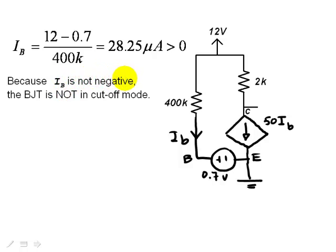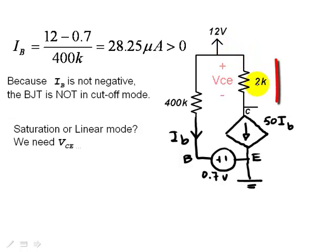But that leaves one open question to answer. Is it in saturation or in linear mode? To answer that question, we will need VCE, the voltage between the collector and the emitter. Because the emitter is at 0 volts, it's connected to the reference node. All we need is VC. And VC is the voltage of this node, 12 volts, minus the voltage drop in this 2k ohm resistor, produced by this current, the current in the collector.